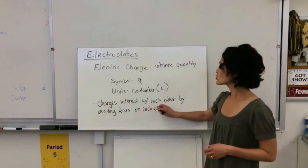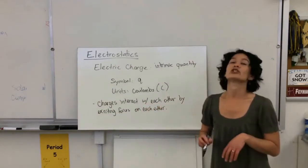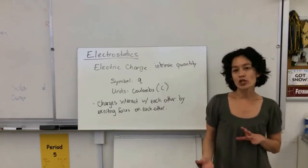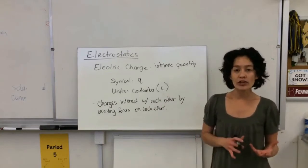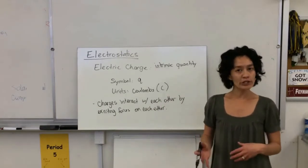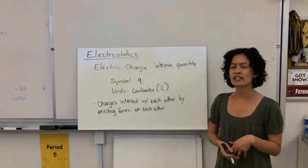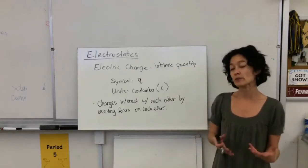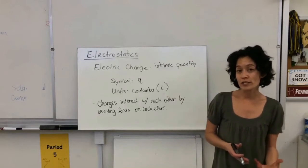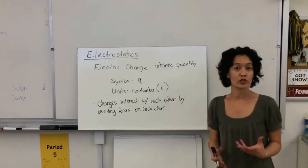You should have seen a little bit of this in chemistry — the idea that opposite charges attract each other and like charges repel each other. We're going to look at the mathematical nature of that, and some conceptual examples and consequences of that attraction-repulsion nature of charges.